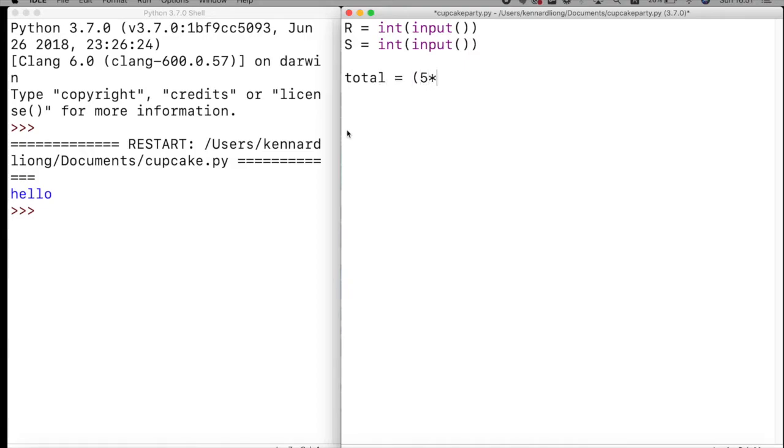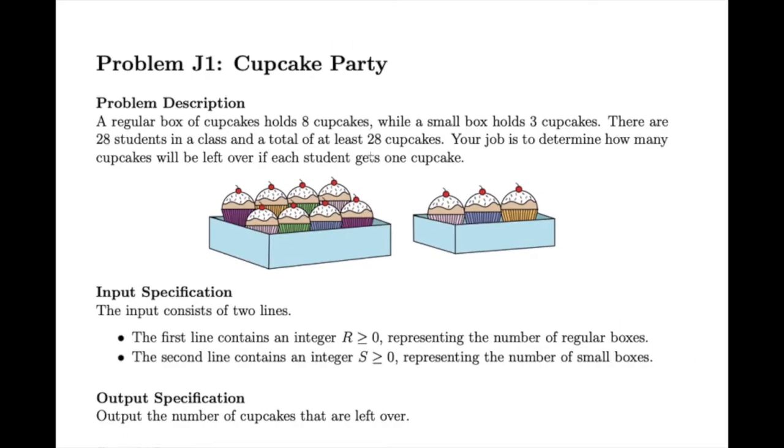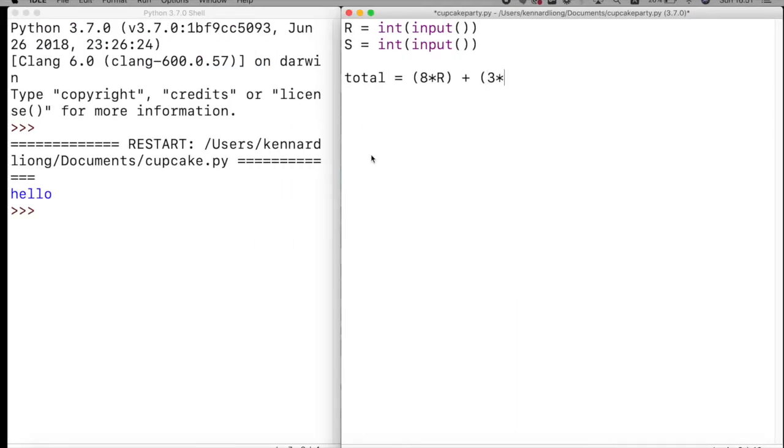And we can find the total number of cupcakes. I'm just going to assign a variable called total. Since the regular ones contain eight each and the small ones contain three each, the total is going to be that.